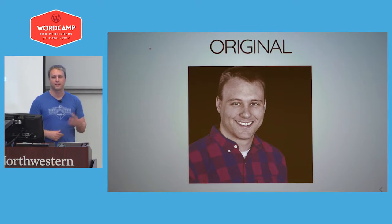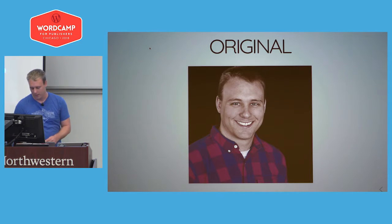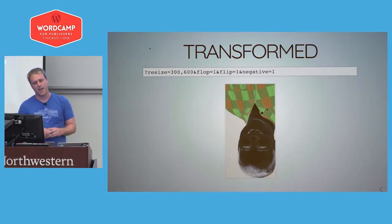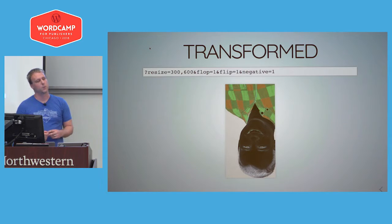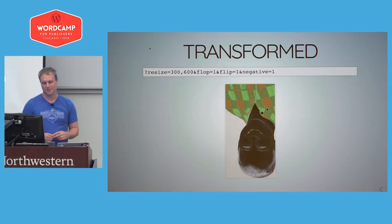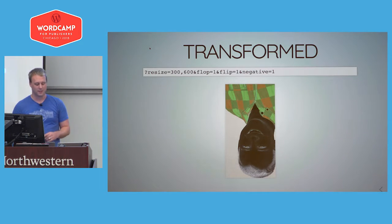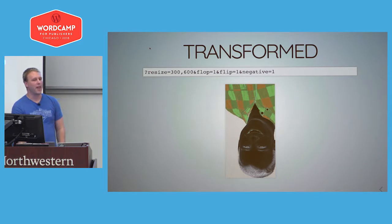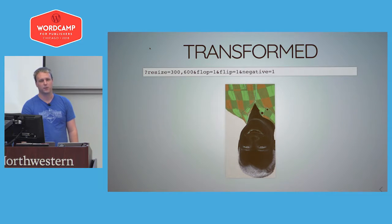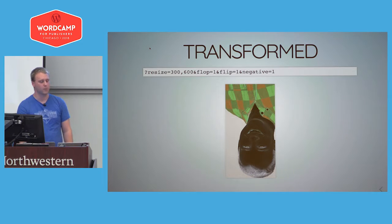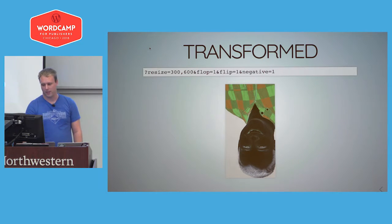All that really means is we can take an original image and easily transform it just by adding a query string. Here we're resizing it to 300 pixels wide and 600 pixels tall, flopping it horizontally, flipping it vertically, and inverting the colors. This means we can now get any image size we need on demand without crunching through our entire media library. If design requests a change, we can implement it right away — it makes things much more flexible with less friction.